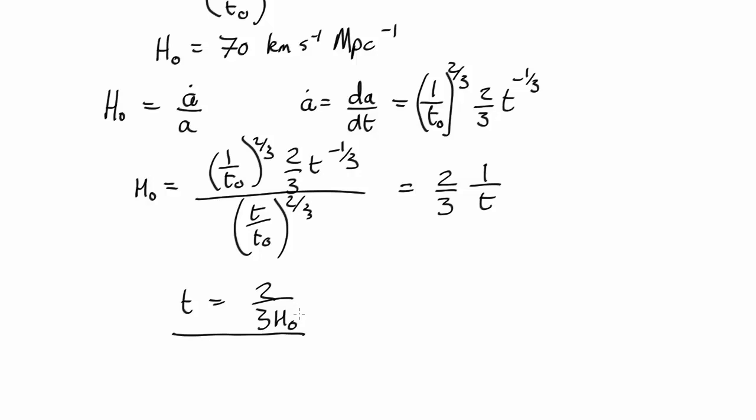To actually put numbers in, we're going to have to convert H₀ from kilometers per second per megaparsec into something more sensible. So multiply by 1,000 to convert to meters per second, and then divide by 1,000 to convert to a parsec, and divide by the length of a parsec, which is 3.08 times 10 to the 16 meters.